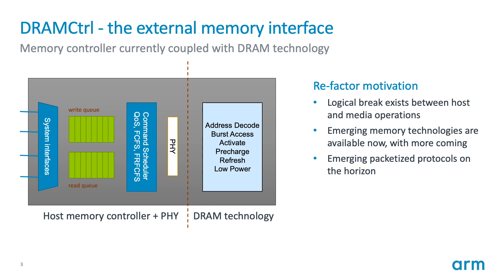Within GEM5 the DRAM controller is used to interface to external user-addressable memory, and this object contains two main components shown here in the picture. You have the host memory controller which interfaces to the system-on-chip fabric, contains read or write queues, and a command scheduler. Then there's the DRAM technology component which is very media-specific, based off of the DRAM architecture and contains timing requirements as well as potentially IDD values for power analysis. There is a logical break that exists between the host and media operations, and as we look towards the future where we want to support different media types and potentially different types of protocols, it makes sense to break these pieces apart.